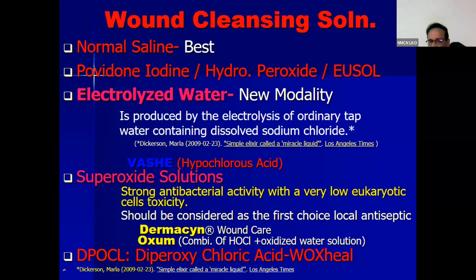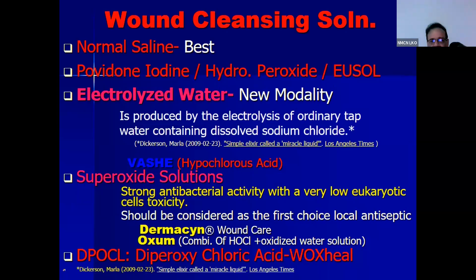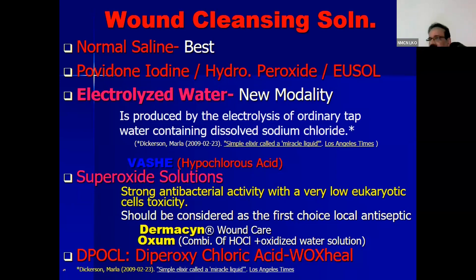For cleaning solutions, electrolyzed water is also available — in the USA there is a Vashe solution, HOCl or hypochlorous acid, which kills gram-positive, gram-negative, and anaerobes. There are certain superoxide solutions now available in India, like Dermacin and Oxum, which are a combination of hypochlorous acid and oxidized water solution. They have strong antibacterial activity and very low eukaryotic cell toxicity.